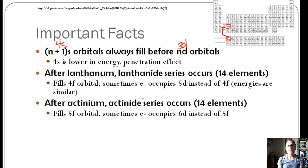And then same deal with actinium, which goes right here, is the actinide series. It's also got 14 elements. Sometimes it will fill the 5f orbital, and sometimes electrons will occupy 6d instead of 5f. Same idea. Energies are similar.